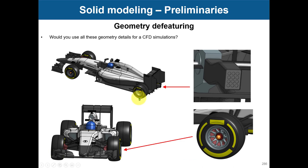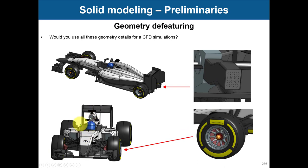For instance, you have this F1 car and you can see all these details here. In the rear part, you have holes, gaps, knots, and bolts on the tires. If you want to resolve all those details, it will increase your cell count by a lot. So it's always a good idea to do some cleaning if you are receiving an external geometry.